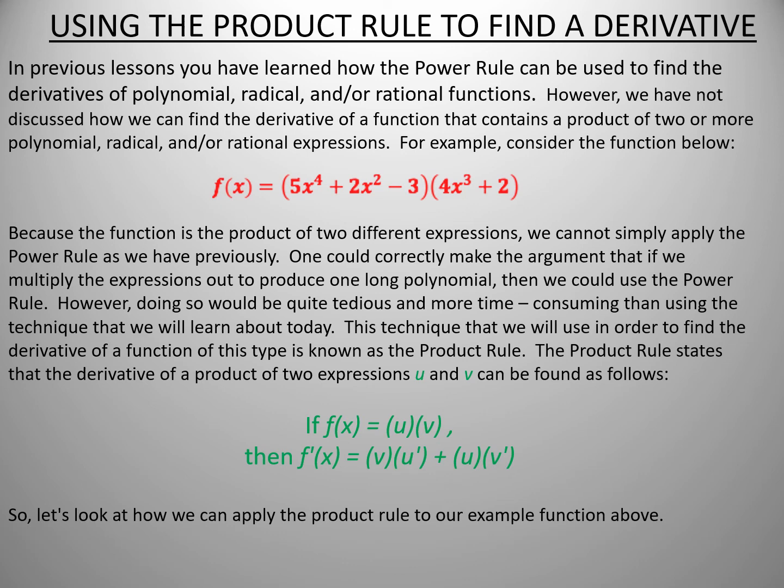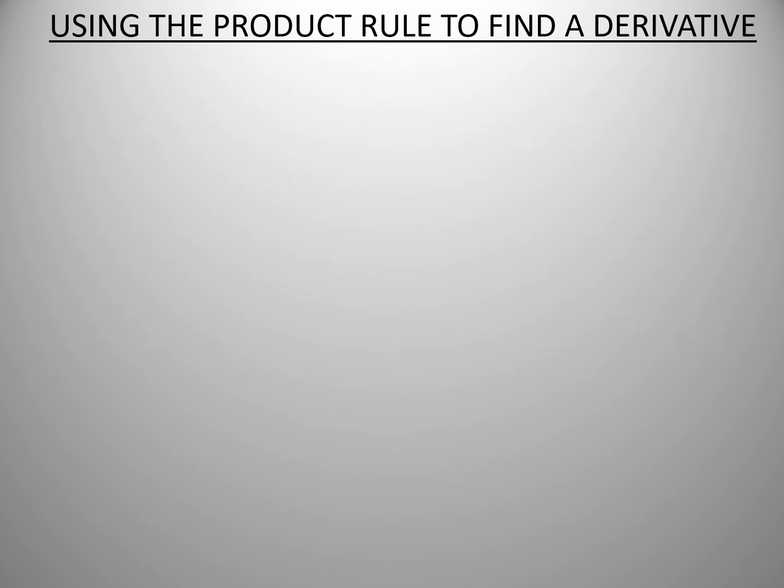So let's look at how we can apply the product rule to our example function above. If f of x equals 5x to the fourth plus 2x squared minus 3 times 4x cubed plus 2, then we can say that u equals 5x to the fourth plus 2x squared minus 3 and v equals 4x cubed plus 2.